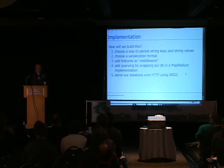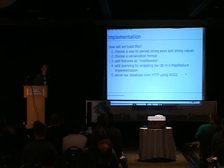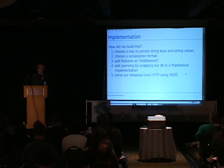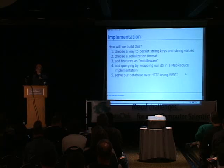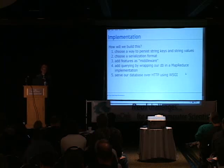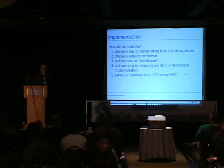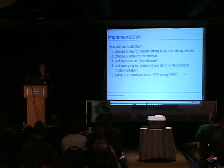So how are we going to build a database that stores documents like this? First we'll choose a way to persist simple string keys and string values — we'll talk about a couple of approaches. Then we'll talk about how we'll serialize the data. Once that's in place, we'll add features as middleware — people who work with Whiskey will recognize this approach. Then we'll talk about MapReduce querying and serving the database over HTTP.